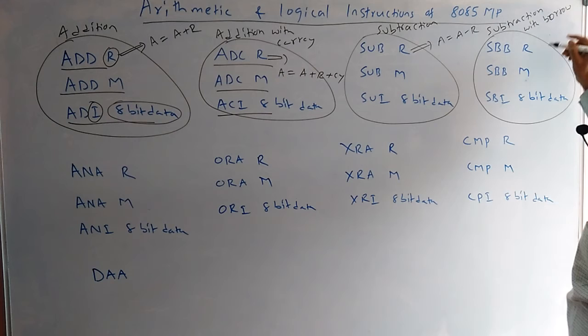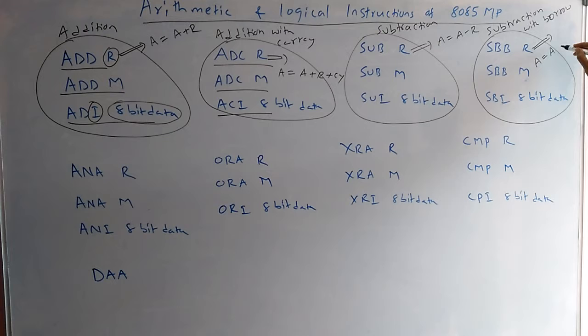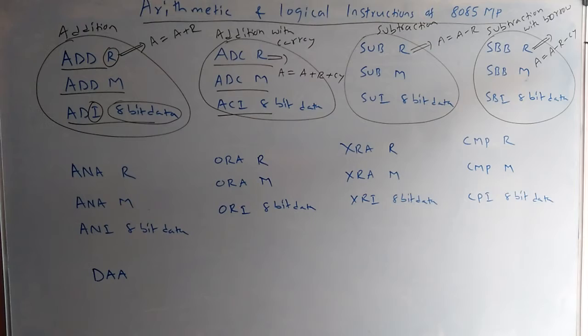For subtraction with borrow, A equals A minus R minus the previous borrow, which is also subtracted. There is no separate flag for borrow; the carry flag works as borrow. That is, minus CY — the previous borrow is also subtracted.